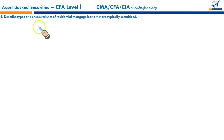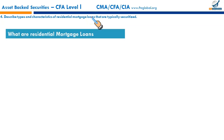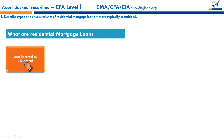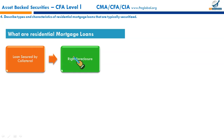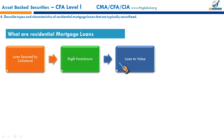Residential mortgage loans are loans secured by real estate collateral, where the borrower is obligated to make a predetermined series of payments. The mortgage gives the lender the right to foreclose if the borrower defaults — the lender can take possession of and sell the property to recover funds. The loan-to-value ratio reflects the loan amount relative to the property's purchase price; since borrowers make a down payment, the LTV ratio is normally less than 100%.